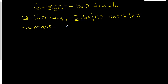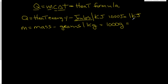Next variable: M. M is your mass, and mass will be measured or given as either grams or kilograms. Kilo means 1000, so you have 1000 grams equivalent to one kilogram. Sometimes we'll have to do some converting back and forth between those two units.